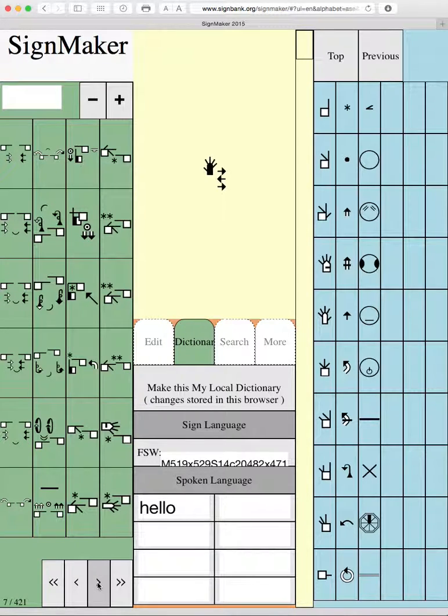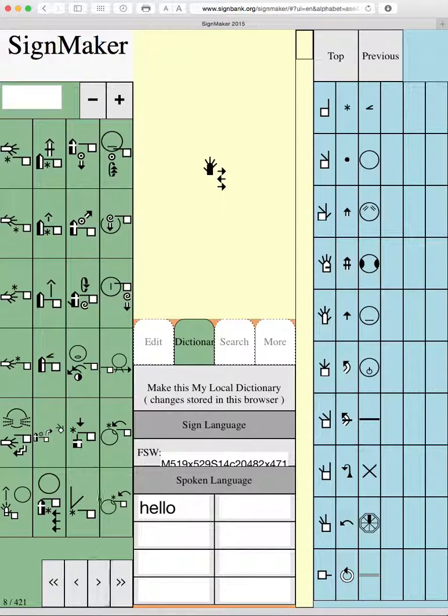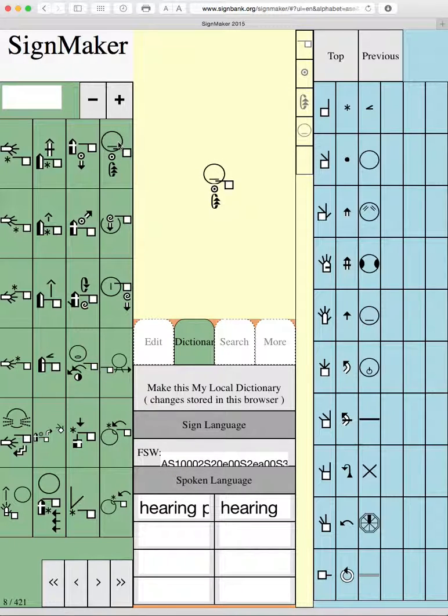So let me see. What do I want to look for? I want to see what in the world does this sign mean. When I look at the sign in the yellow box and I look under the dictionary tab, it tells me that it means hearing or a hearing person.